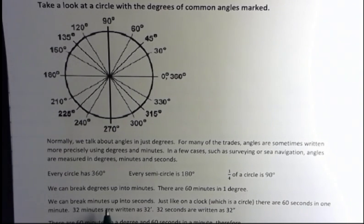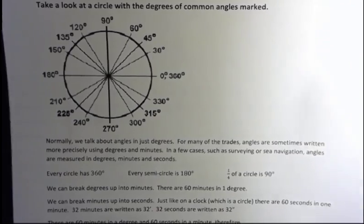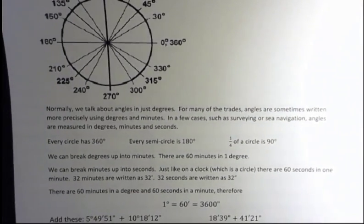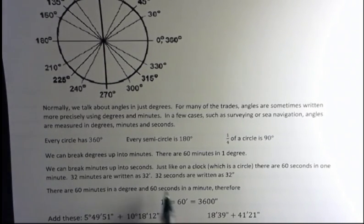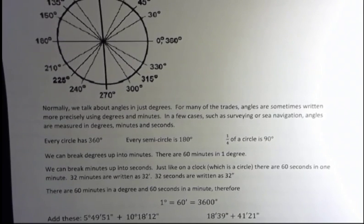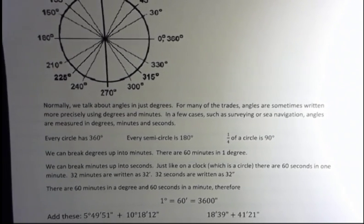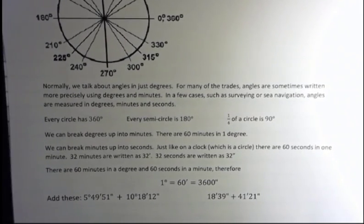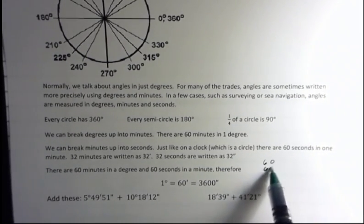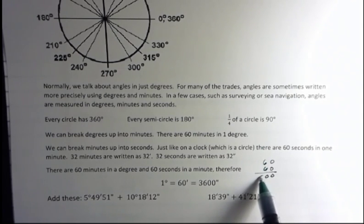And then we can break minutes up into seconds. Just like on a clock, which is a circle, there are 60 seconds in one minute. When I write 32 minutes, I write it as 32 with one tick mark. And 32 seconds is written as 32 with two tick marks. So that's the difference between what minutes and seconds look like. If you take 60 times 60, that's where that comes from.